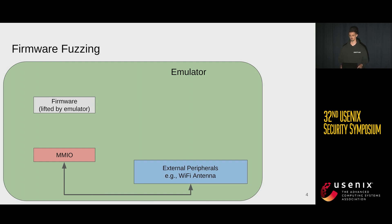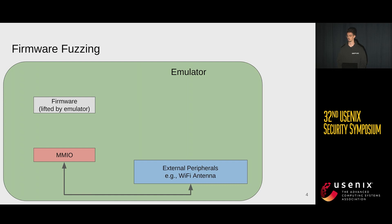A lot of work focuses on one big problem we have here: all the external peripherals we encounter in embedded firmware. Just lifting a binary blob to some architecture we can execute on our laptops is fairly easy — QEMU can do that. But QEMU does not come with all the vast kinds of peripherals found in embedded devices, so we have to model these somehow, and a lot of work is focusing on that.